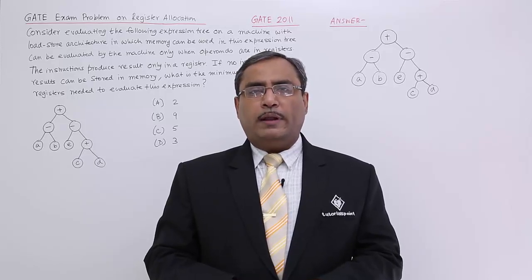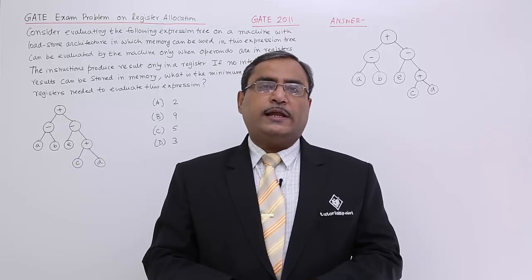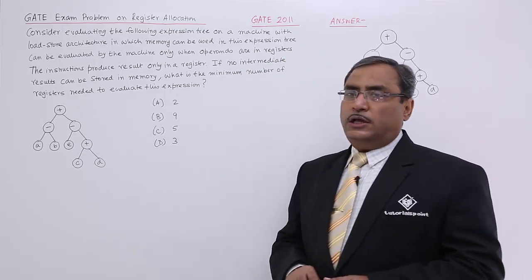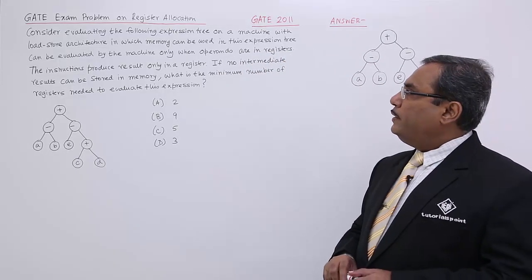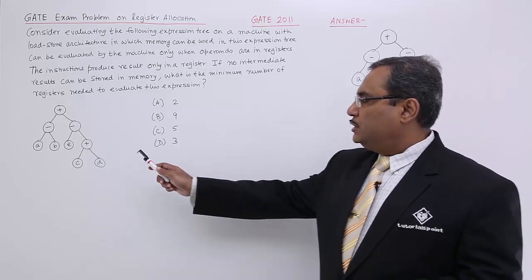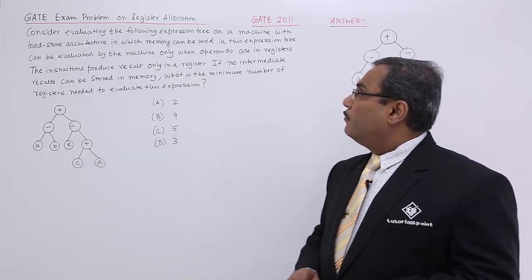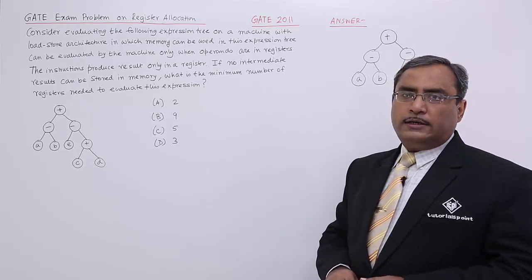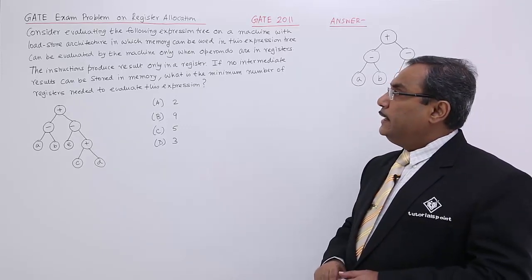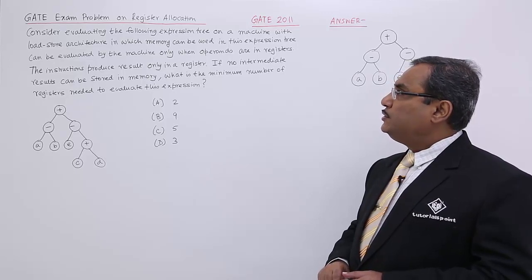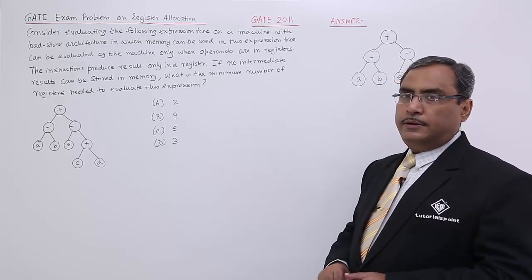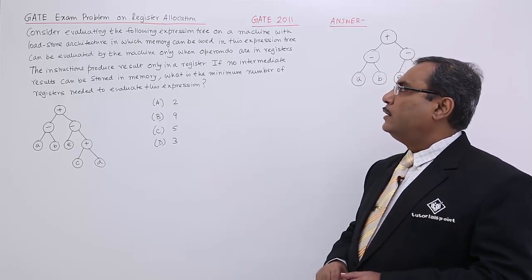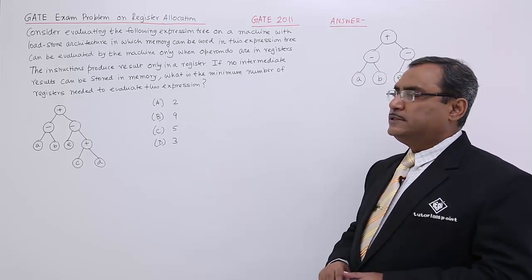Let us solve one problem on register allocation. Here is the problem: consider evaluating the following expression tree on a machine with load and store architecture, in which this expression tree can be evaluated by the machine only when operands are in the registers.